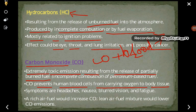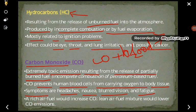Carbon monoxide does not allow or prevents the carrying of oxygen to the blood tissue and body tissue. The symptoms include headache, nausea, blurred vision, and fatigue, which means weakness. These are the symptoms faced by a person exposed to high amounts of carbon monoxide. A rich air-fuel mixture would increase carbon monoxide, while a lean air-fuel mixture would lower the carbon monoxide emission.